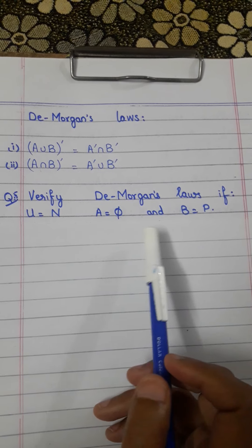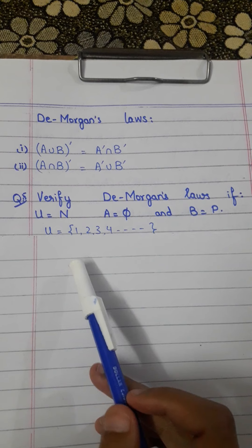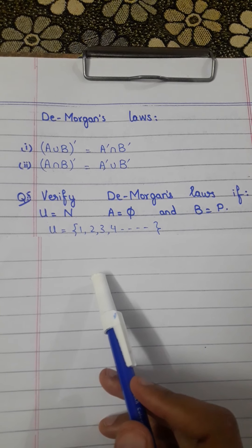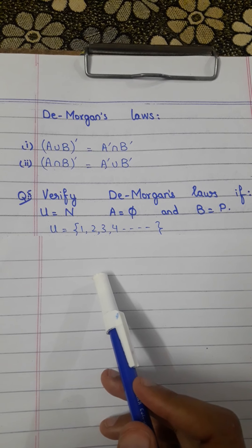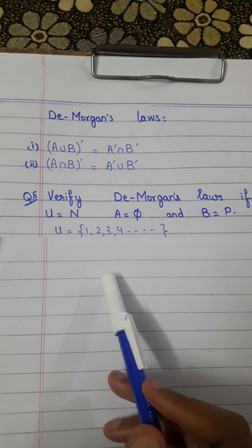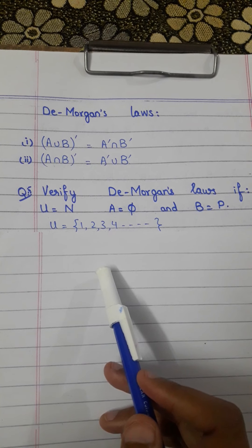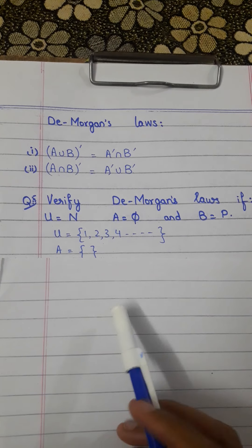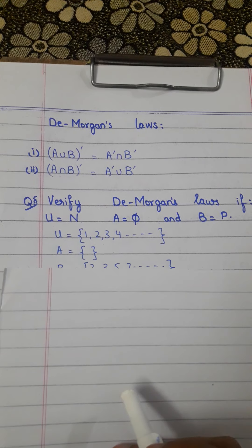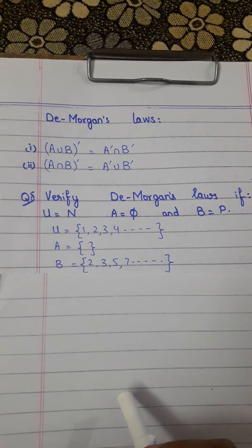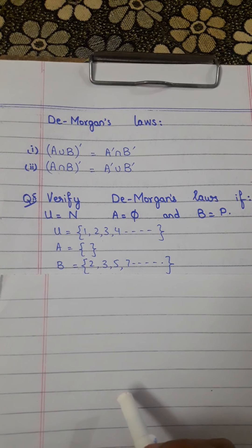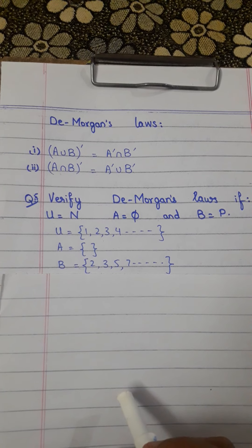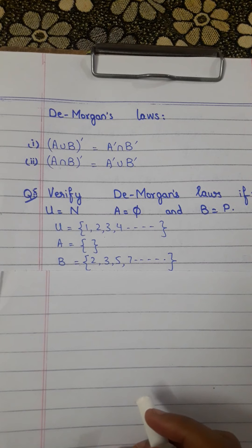Question number 5 is: verify De Morgan's Laws if U equals the natural numbers starting from 1, 2, 3, 4 and so on; A equals the empty set, meaning having no members; and B equals the set of prime numbers which starts from 2, 3, 5, 7 and so on.